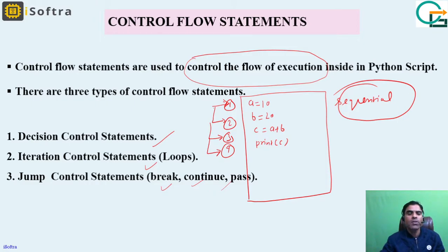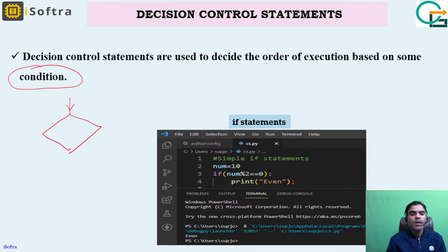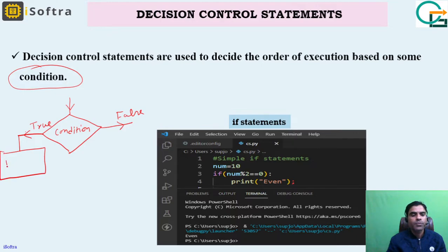Decision control statements are used to decide the order of execution based on some condition. We can understand this with a flowchart. The control flow depends on a condition that can be true or false. If the condition is true, one block of statements will be executed; if the condition is false, another block of statements will be executed.